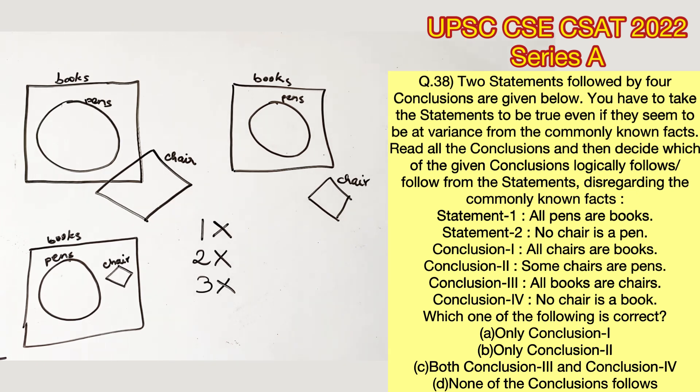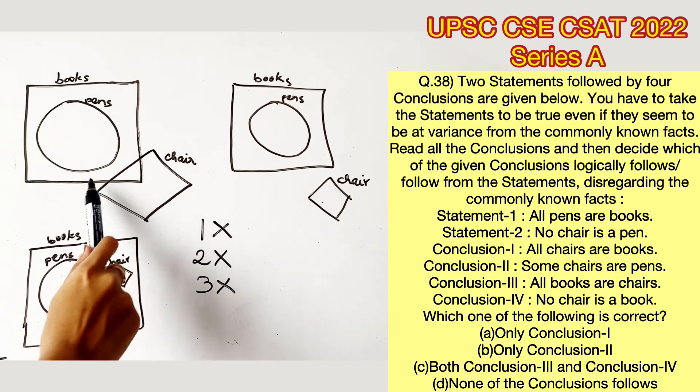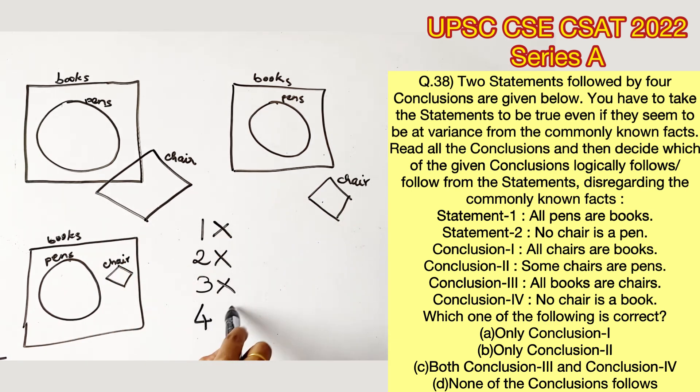The fourth conclusion says no chair is a book. That also cannot be true in all cases. Therefore, all four conclusions are wrong, which concludes that option D is the right answer.